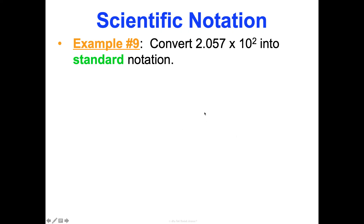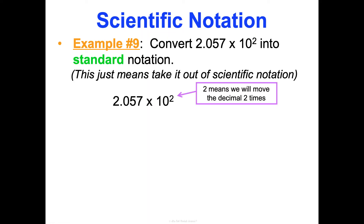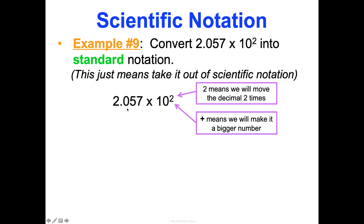Now let's go the opposite direction — take a number in scientific notation and put it in standard notation. Convert 2.057 × 10² into standard notation. The exponent 2 means we move the decimal two times. It's positive, so we're making the number bigger. Moving one, two places gives us 205.7. So 205.7 is the same as 2.057 × 10². Both have four sig figs.